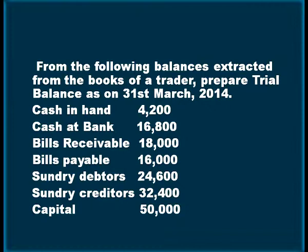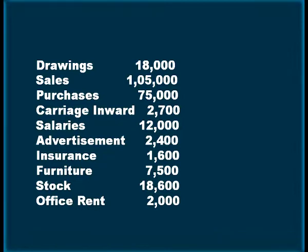Here is a question to prepare a trial balance. From the following balances extracted from the books of a trader, prepare trial balance as on 31st March 2040: cash in hand 4,200; cash at bank 16,800; bills receivable 18,000; bills payable 16,000; debtors 24,600; creditors 32,400; capital 50,000; drawings 18,000; sales 1,05,000; purchases 75,000; carriage inward 2,700; salaries 12,000; advertisement 2,400; insurance 1,600; furniture 7,500; stock 18,600; and office rent 2,000.